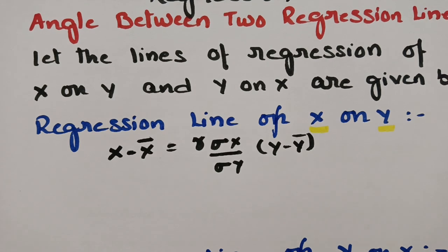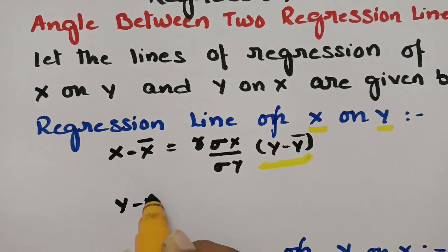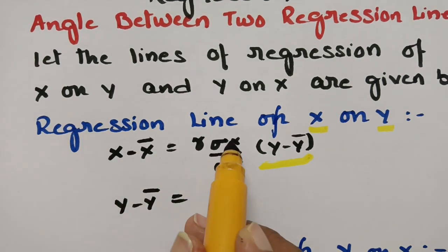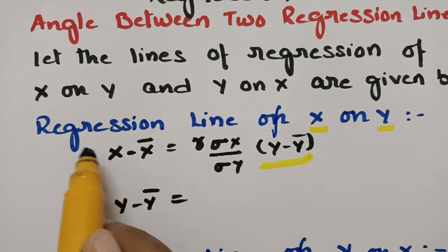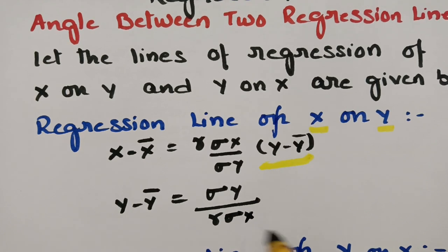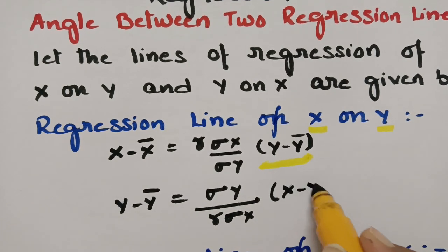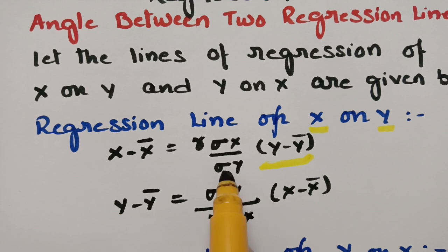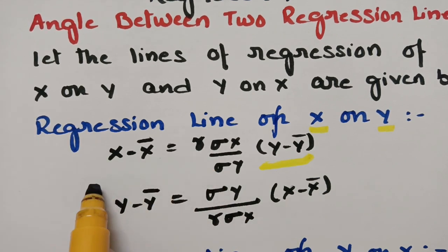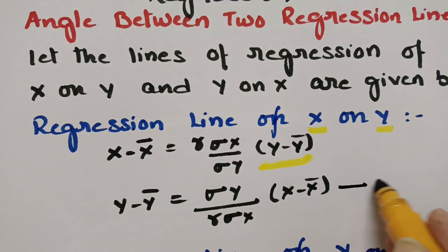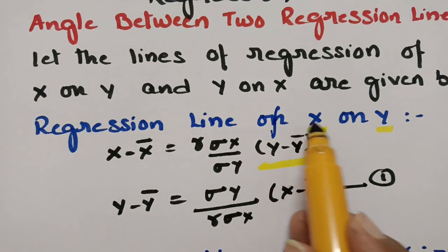So in this I need y minus ȳ. If I take y minus ȳ to one side, then y minus ȳ is equal to — I send sigma y and r times sigma x to the other side, so sigma y goes to the numerator and r times sigma x to the denominator — that is r times sigma x into x minus x̄. This is equation one, the regression line of x on y.